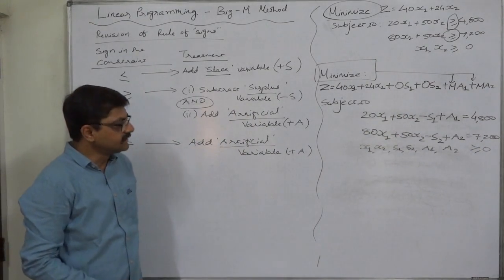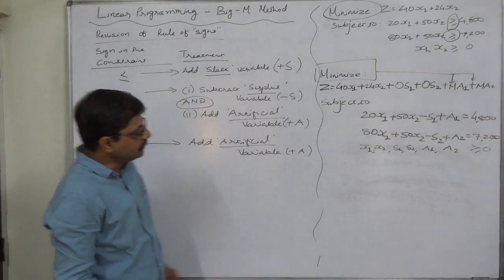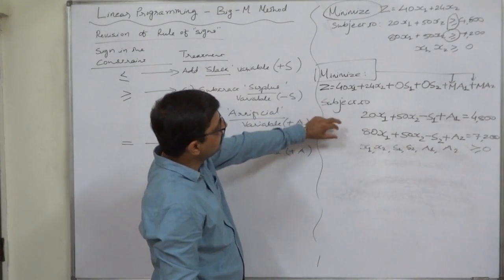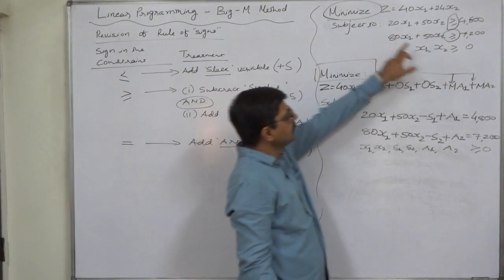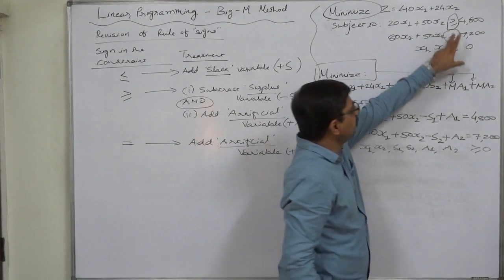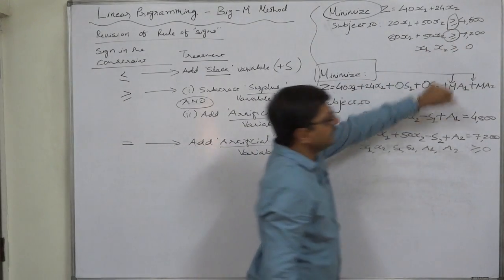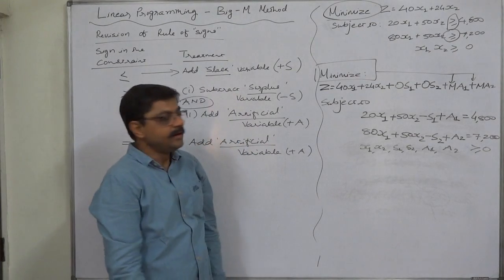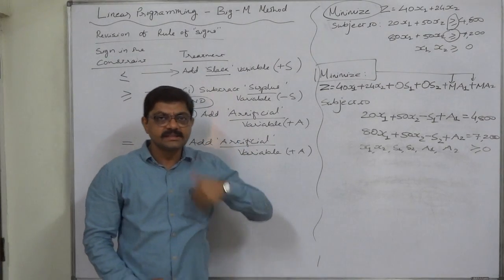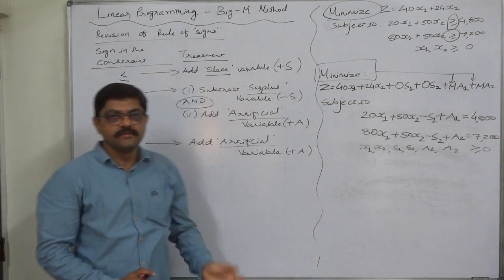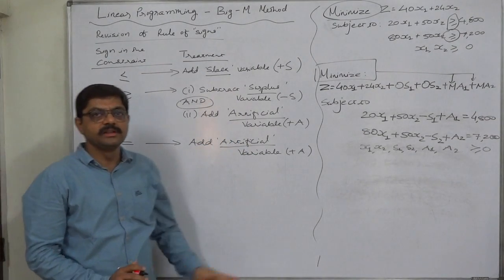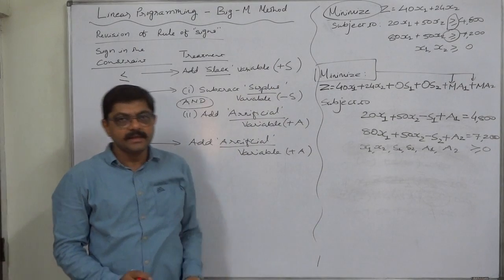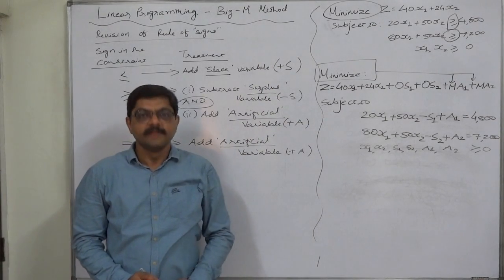This is the simplification of a linear programming problem having greater than or equal to signs in the constraints. In the next video lectures we are going to solve this problem through the Big M method. Thank you very much.